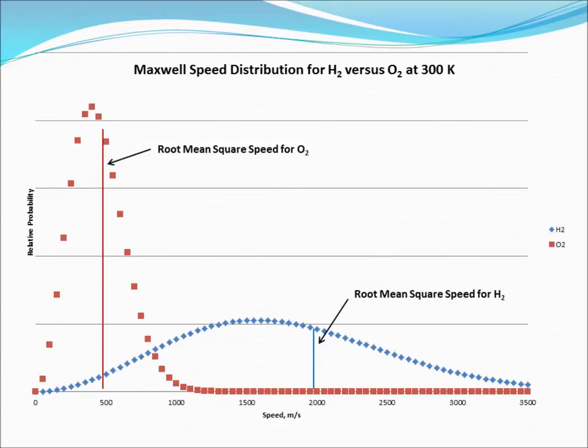At a given temperature, let's say room temperature, a less massive molecule such as H2 moves faster on average than a more massive molecule, such as O2, as shown in this picture. Note that the root mean square speed of H2 is approximately 1930 meters per second, while the root mean square speed of O2 at the same temperature is only about 480 meters per second.